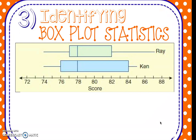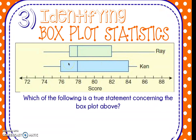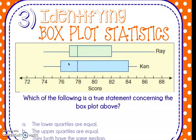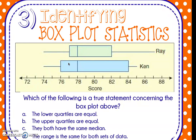So let's take a look at this question here. This is called a double box plot — it's where there's a box plot on the top and a box plot underneath. Our question says: which of the following is a true statement concerning the box plot above? A says the lower quartiles are equal. Here's my lower quartile for the blue chart for Ken, and it's a 78. Here's the lower quartile for Ray and he's at a 77. So we can immediately tell that the lower quartiles are not equal — that is not a true statement. The upper quartile for Ken is 84, and for Ray it's 82 — also not equal, so that can be marked out.